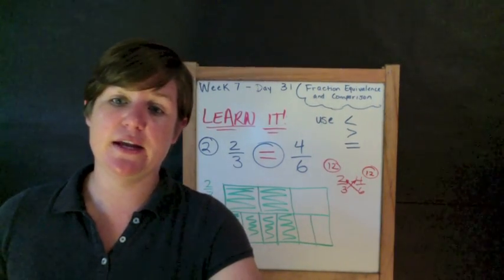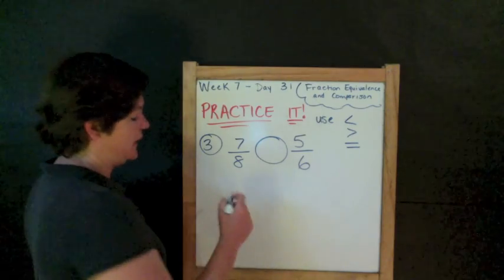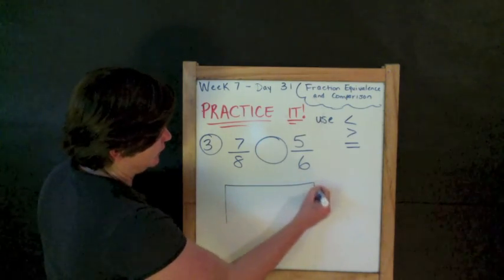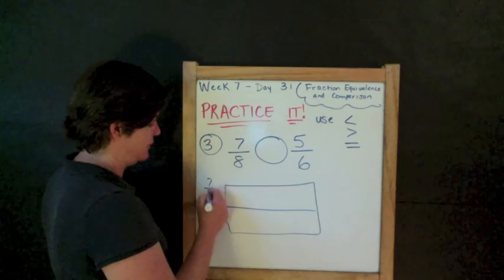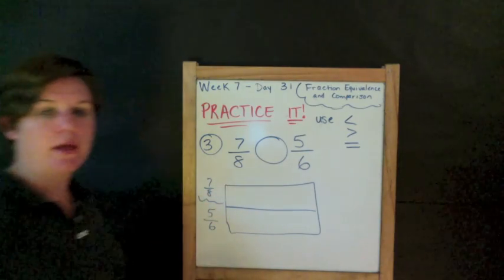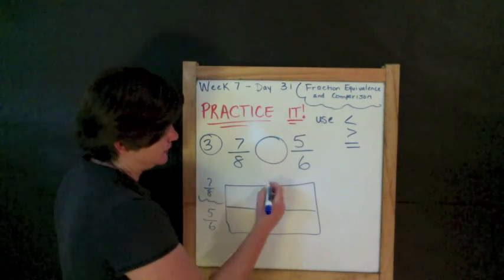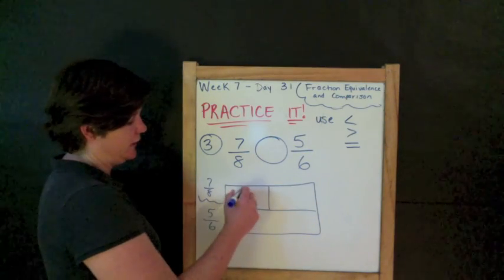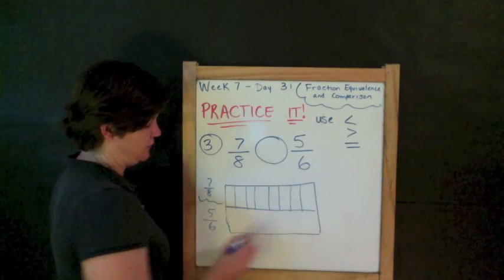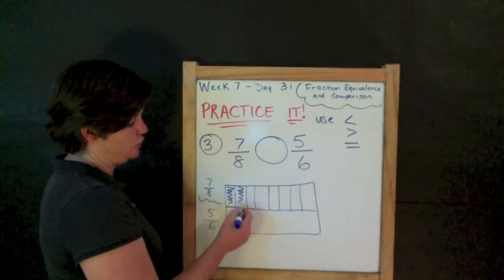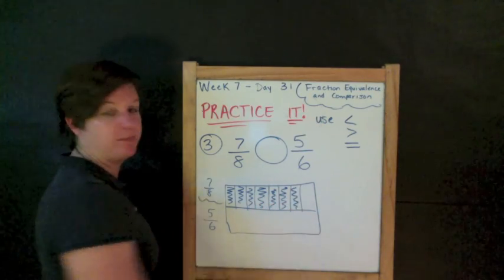Let's try number three in the practice it section. Actually, you can try number three first and then come back and meet me. Number three. We've got seven-eighths and five-sixths that we are comparing. Make your rectangle. Divide it in half. We're going to do seven-eighths on top. Five-sixths on the bottom. So, start with my denominator of my first fraction. That is eight. So, eight is even. I can split it in half. And I can do four on this side and four on this side. And shade in seven. One, two, three, four, cinco, seis, siete.